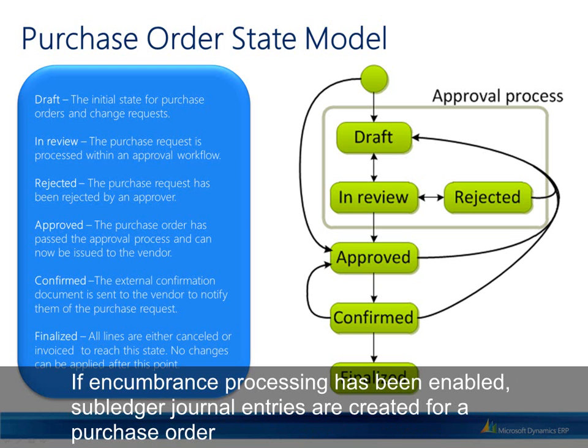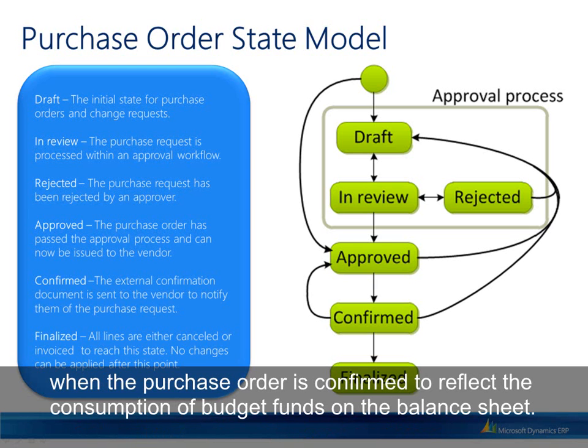If encumbrance processing has been enabled, subledger journal entries are created for a purchase order when the purchase order is confirmed, to reflect the consumption of budget funds on the balance sheet.